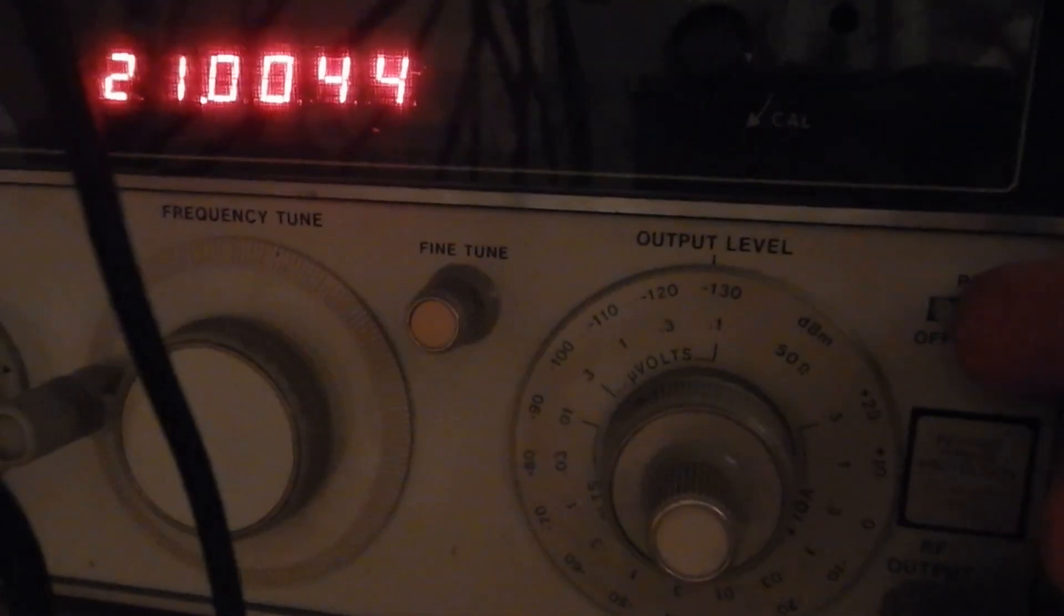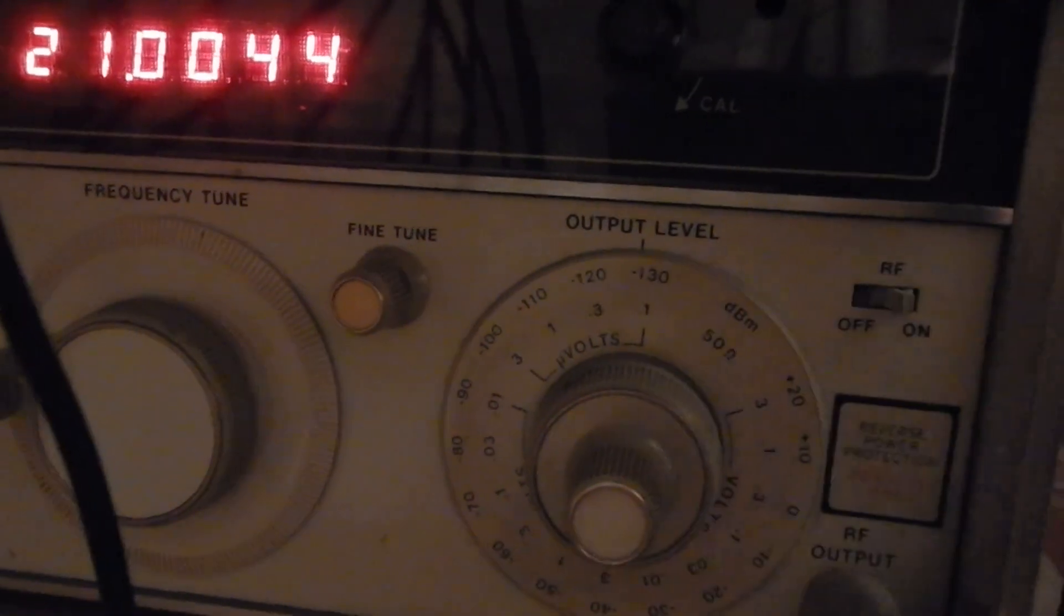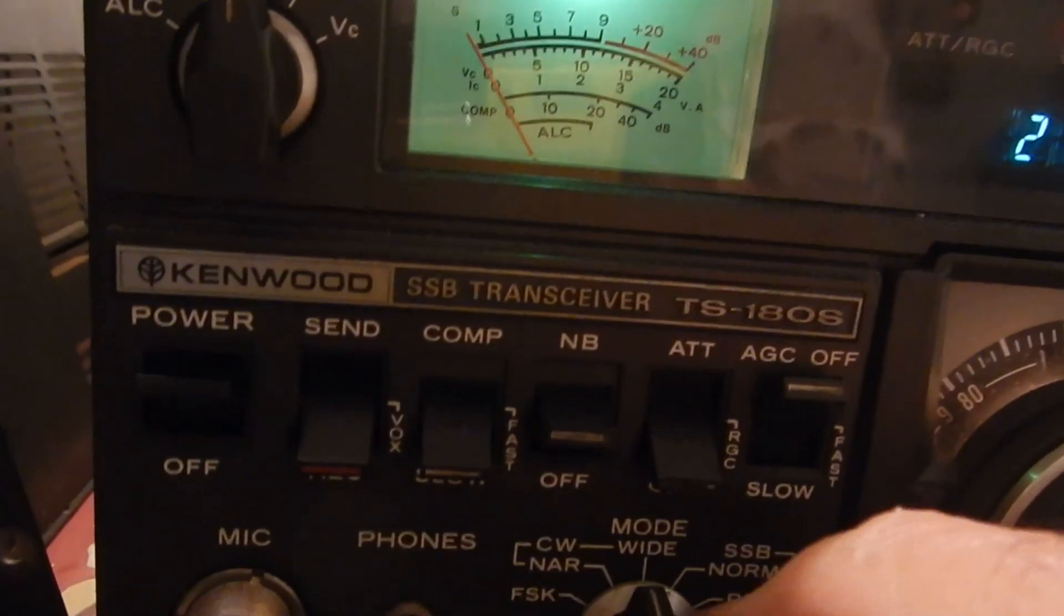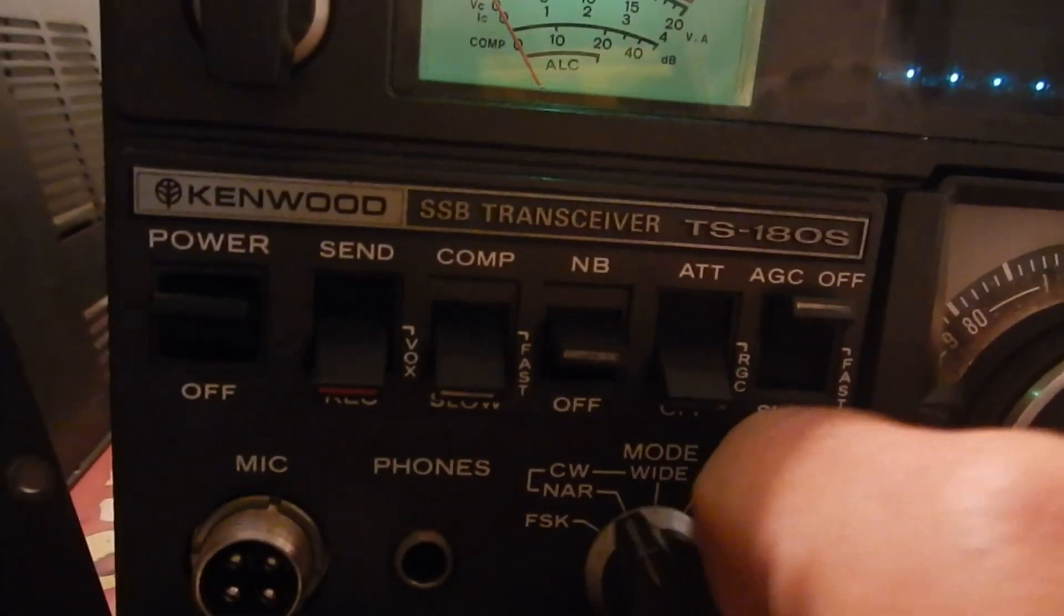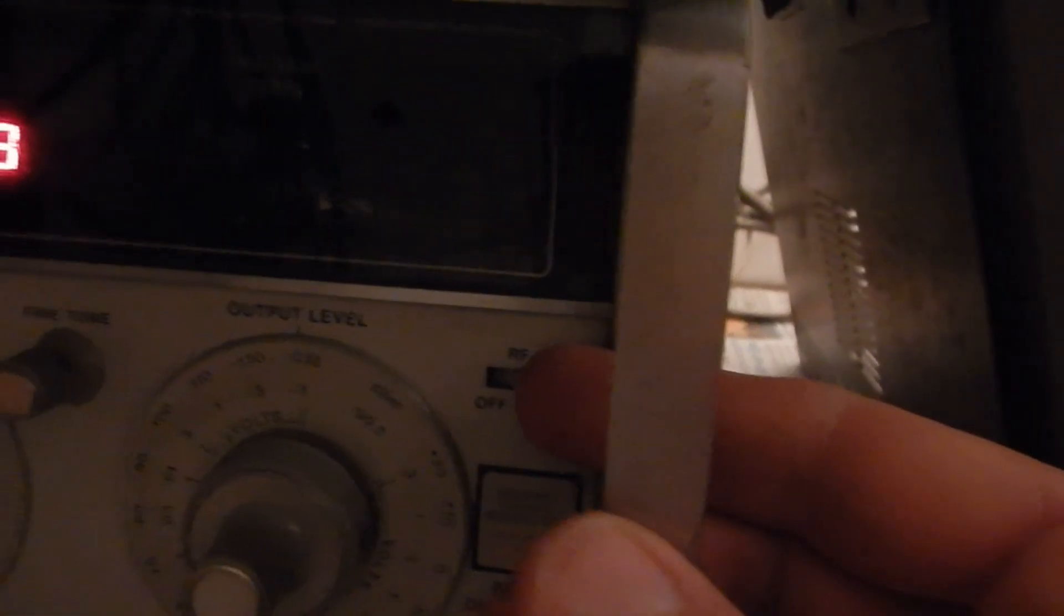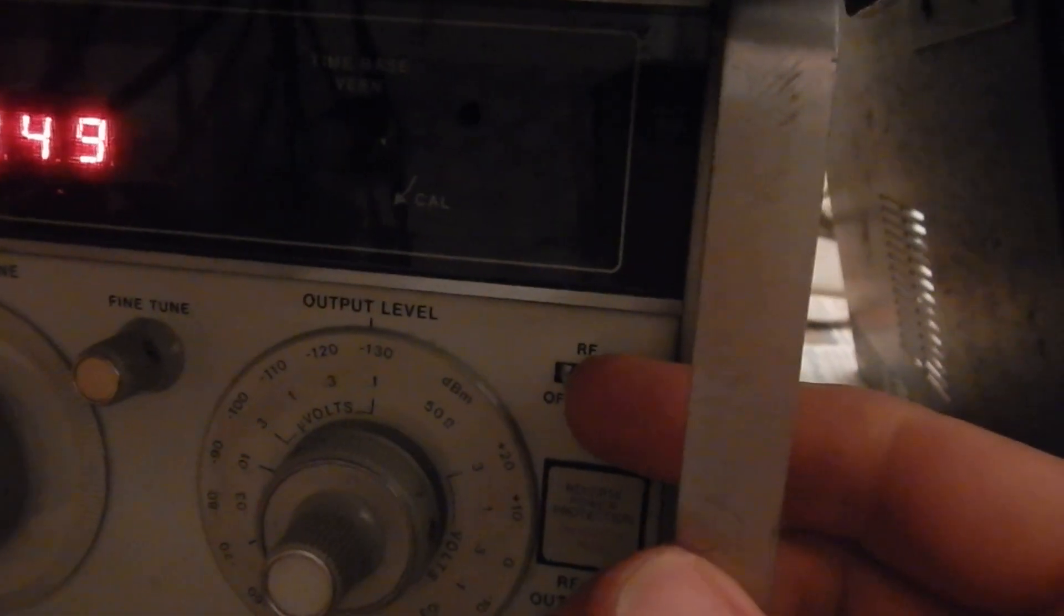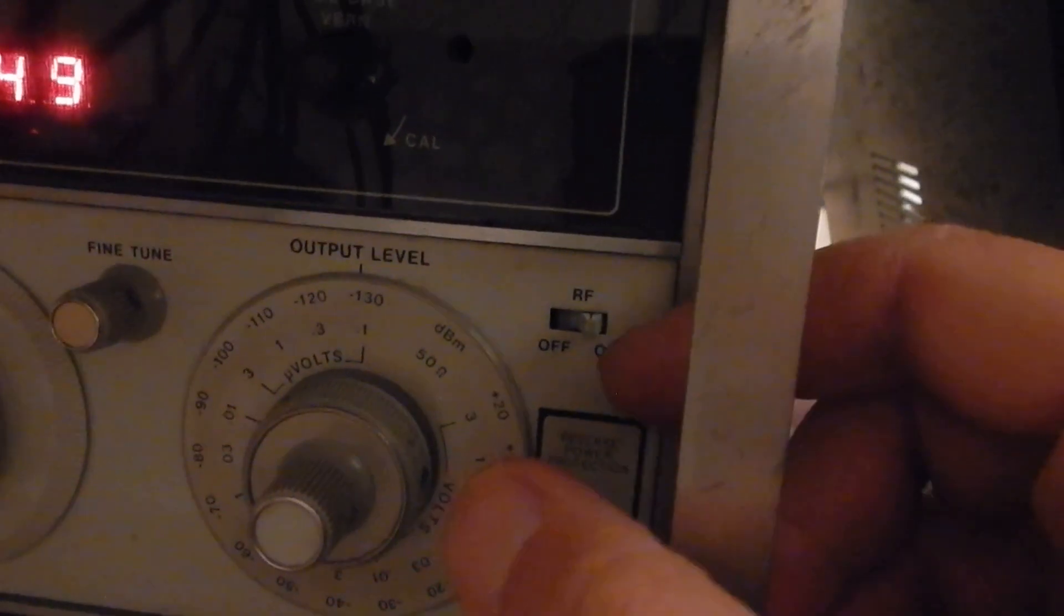The sensitivity of these old transceivers is usually very good. Minus 130 dBm is the lowest signal amplitude that this generator can produce.